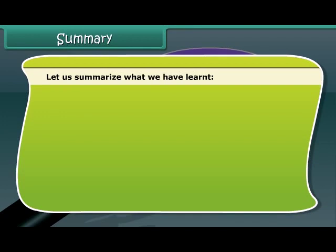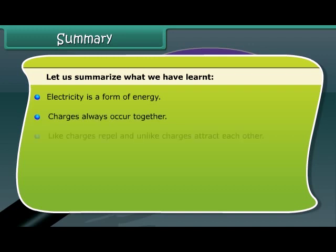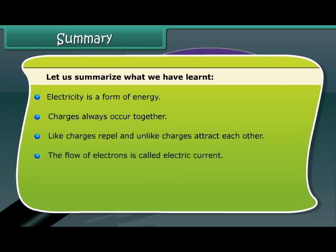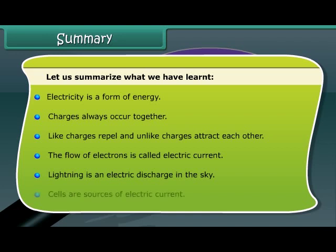Let us summarize what we have learned. Electricity is a form of energy. Charges always occur together. Like charges repel and unlike charges attract each other. The flow of electrons is called electric current. Lightning is an electric discharge in the sky. Cells are sources of electric current.